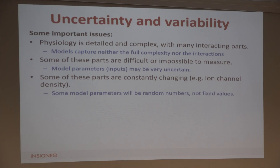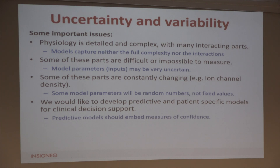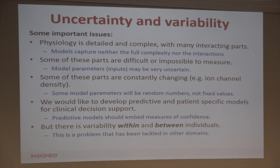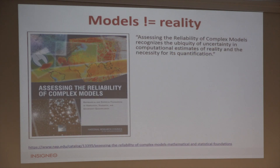Models neither capture the full complexity nor all of the interactions that are going on. Some of our model inputs — by which I mean parameters — may be uncertain, and some are going to be changing, so they won't even be a fixed value if we could measure them precisely. If we're going to deploy models for clinical decision support, ideally we'd like to embed some measure of confidence in a model prediction — a confidence interval or an estimate of variance.